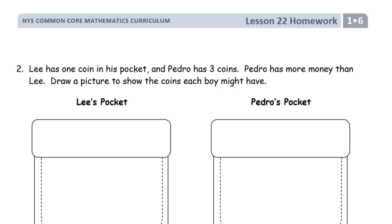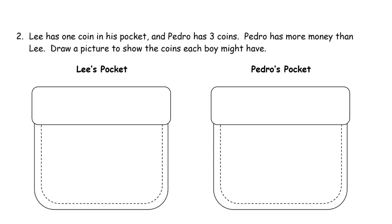And now page 2. Lee has 1 coin in his pocket and Pedro has 3 coins. Pedro has more money than Lee. Draw a picture to show the coins each boy might have. So Pedro is going to have more money. More coins doesn't always mean more money.